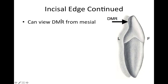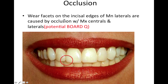The incisal edge continued: because there's that little bit of a distal twist on it, you can see the distal marginal ridge from the mesial. So this little piece poking out right there is the distal marginal ridge.